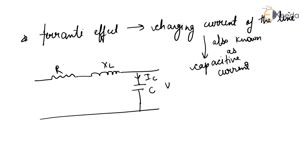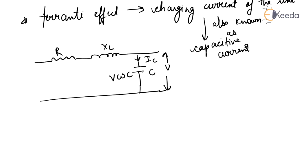The charging current is equal to V·ωC, so it depends on the value of the capacitor as well as the value of the voltage. As voltage or line length increases, more capacitors are effectively connected in parallel, since capacitance is formed at each and every point along the line.